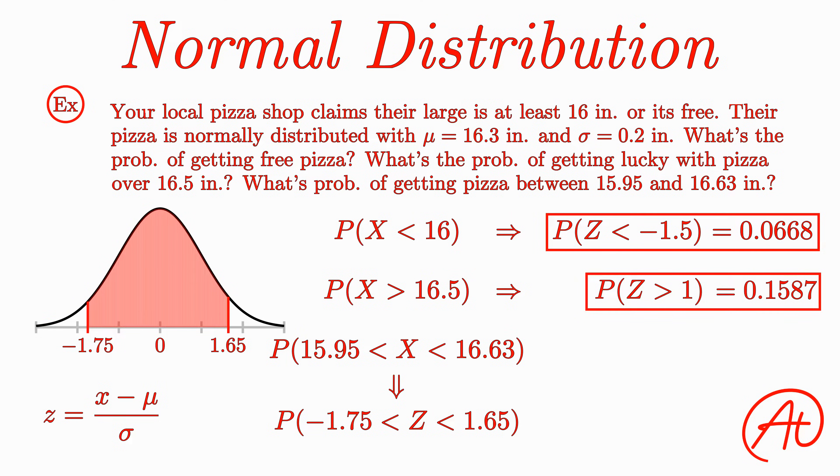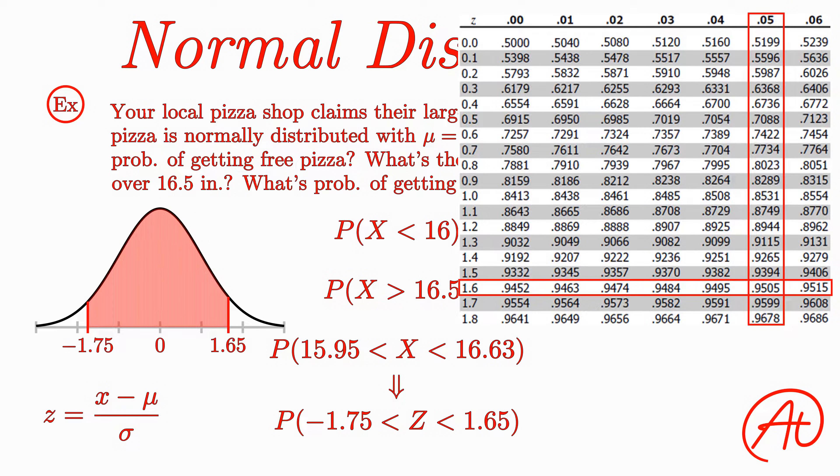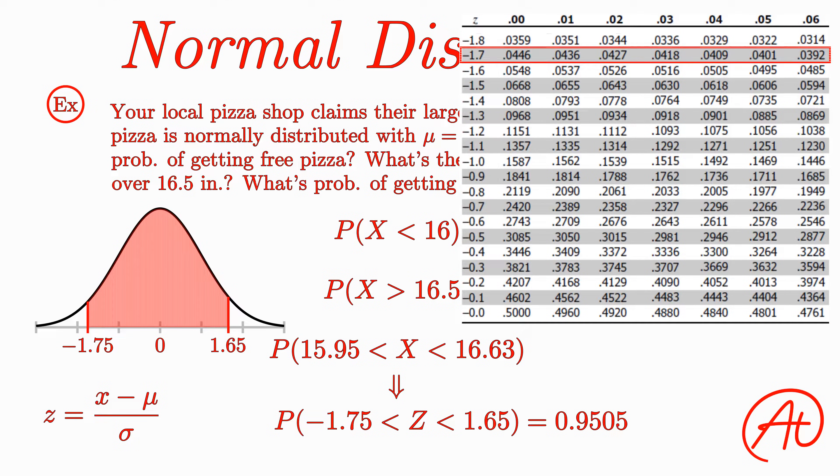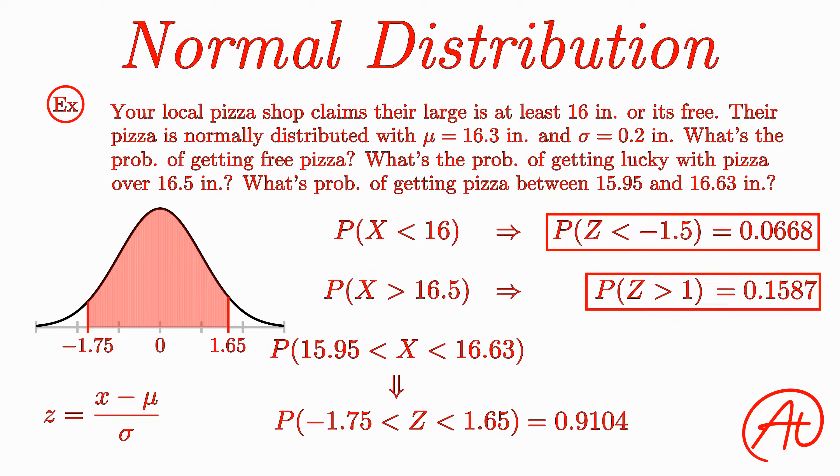Looking in our positive z-score chart, we find the area below a z-score of 1.65 is 0.9505. And then looking in our negative z-score chart, we find the area below a z-score of negative 1.75 is 0.0401. Subtracting these values, we get our answer of 0.9104, or a 91.04% chance of getting a pizza between 15.95 and 16.63 inches.